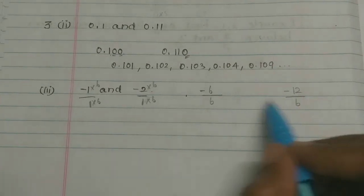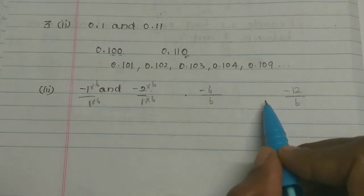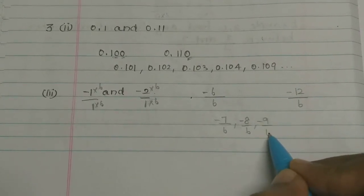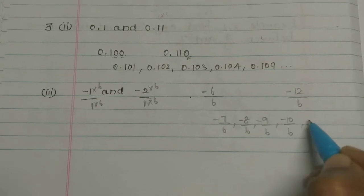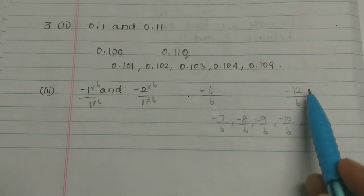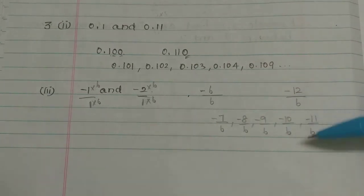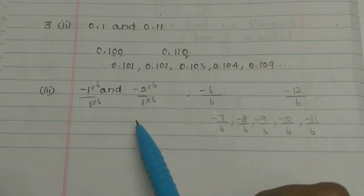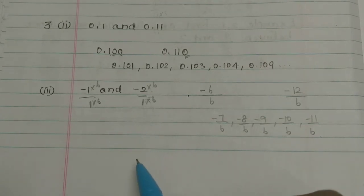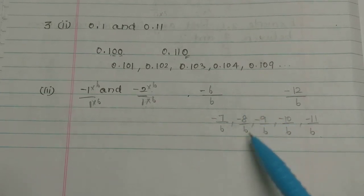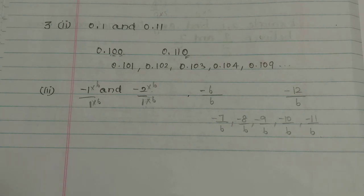If you have minus 6 by 6 and minus 12 by 6, you can find 5 rational numbers between them: minus 7 by 6, minus 8 by 6, minus 9 by 6, minus 10 by 6, and minus 11 by 6. These are the 5 rational numbers between minus 6 by 6 and minus 12 by 6. So first make the denominators equal, then list the integers between the numerators. This is also one of the methods to find rational numbers between two rational numbers.